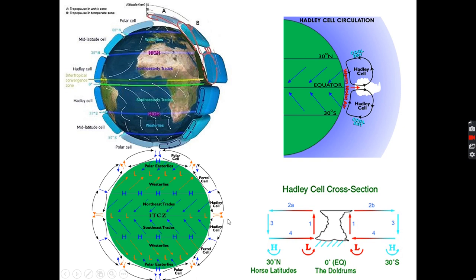This air, as it rises at the equator, must go somewhere and so it travels north and south and eventually descends at around about 30 degrees north and 30 degrees south. At the high altitudes, air is cold and dry, and as the air descends it warms adiabatically. And because it's descending, this also creates high pressure at the surface, denoted by the H's here.